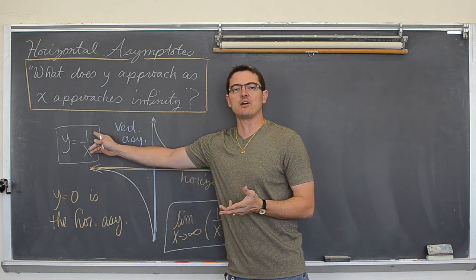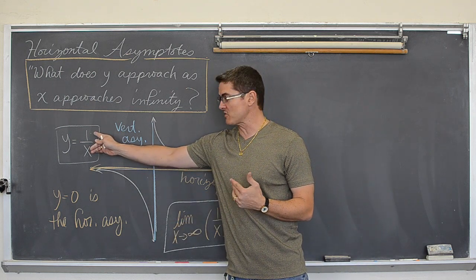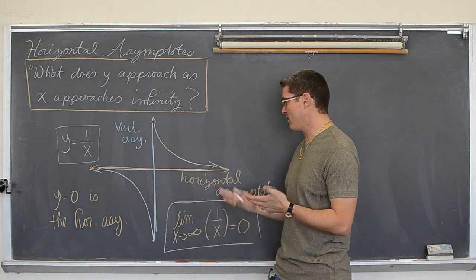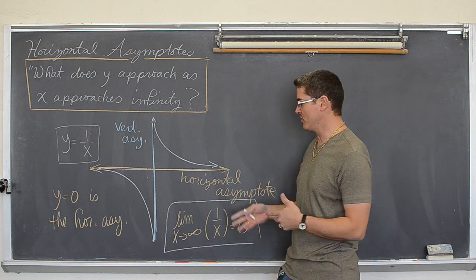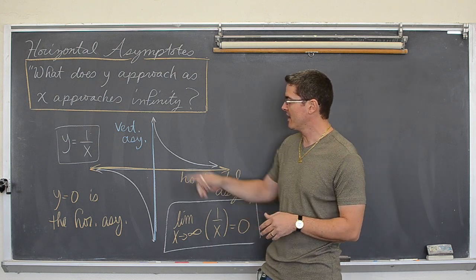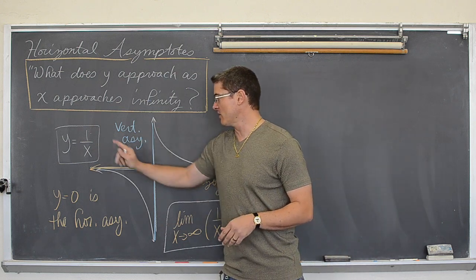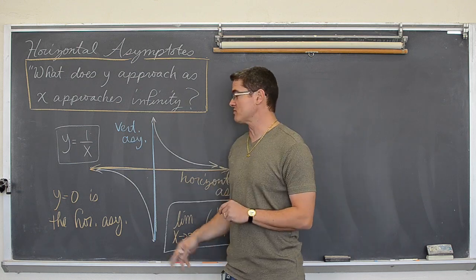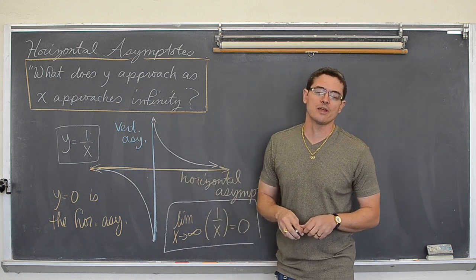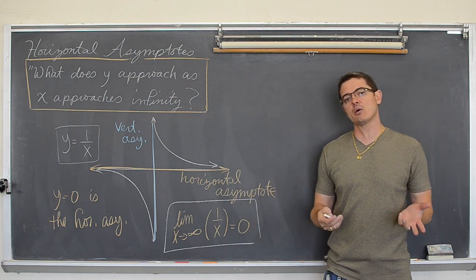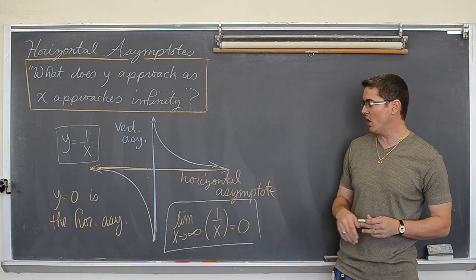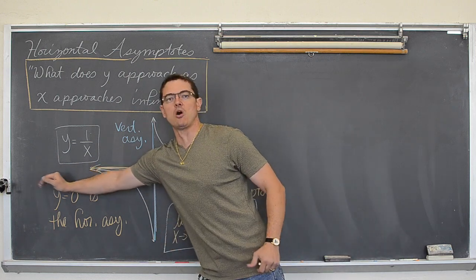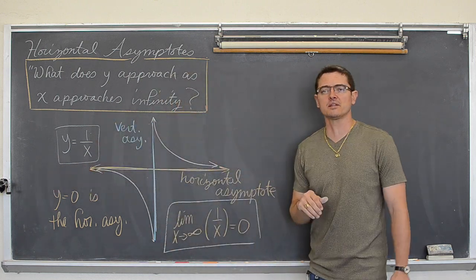I am going to use this base function, the most basic function of y equals one over x, as sort of a parent function for my explanation of this concept. This is undefined at zero, so I don't really care about what is happening near that undefined value of zero or near the origin. I care about what is happening as x becomes increasingly small or increasingly large.